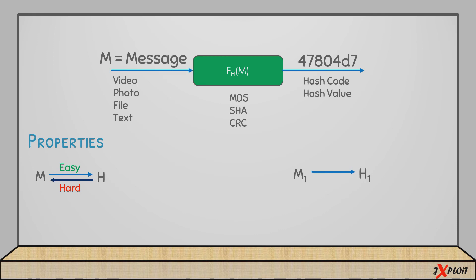Similarly, it is really difficult to get back the original message from a hash code. The second property is collision resistance: if message M1 has hash value H1 and message M2 has hash value H2, then H1 should not equal H2. Each message's hash value must be unique. Just like it doesn't make sense for someone else's fingerprint to unlock your phone, the same applies here.